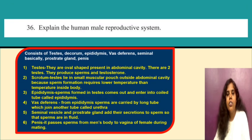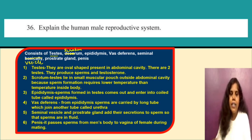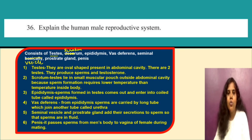Explain the human male reproductive system. It consists of the testes, scrotum, epididymis, vas deferens, seminal vesicle, prostate gland, and penis. You need to explain the structure and function of each part. You can pause the video and take a screenshot or note down these points.